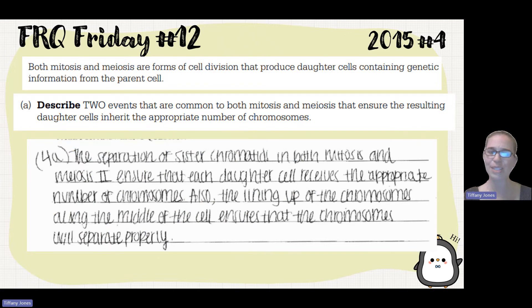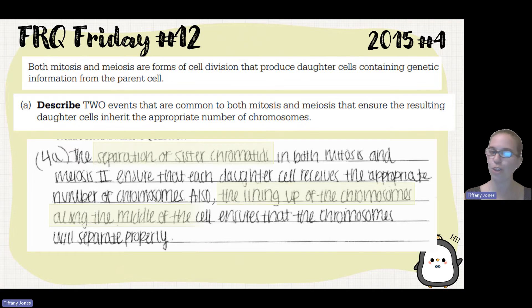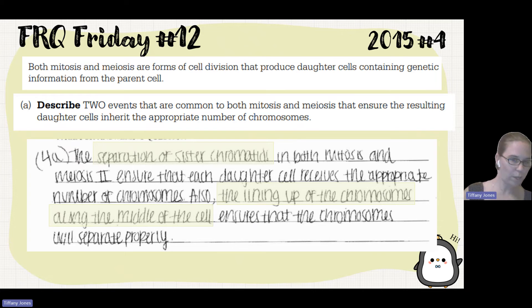A sample student answer: 'Separation of sister chromosomes in both mitosis and meiosis ensures that each daughter cell receives the appropriate number of chromosomes. Also, lining up the chromosomes along the middle of the cell ensures the chromosomes will separate properly.' Those are the two answers — quick and to the point.